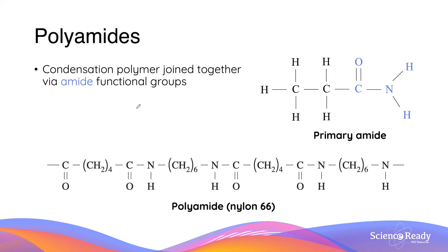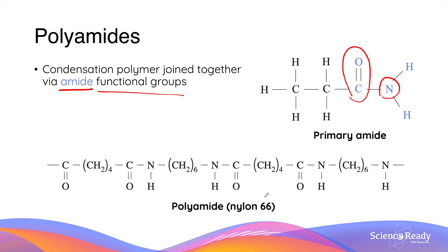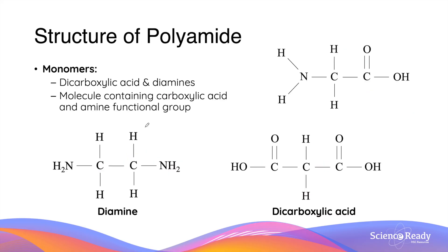Polyamides are the second group of condensation polymers. These polymers are joined together by amide functional groups. An amide is where there is a nitrogen atom adjacent to a carbonyl group — that is, a carbon double-bonded to an oxygen atom. Nylon 66 is an example of a polyamide. Polyamides, like polyesters, can be formed from reacting a diamine and a dicarboxylic acid, whereby the amine functional group combines with the carboxylic acid to produce an amide linkage.